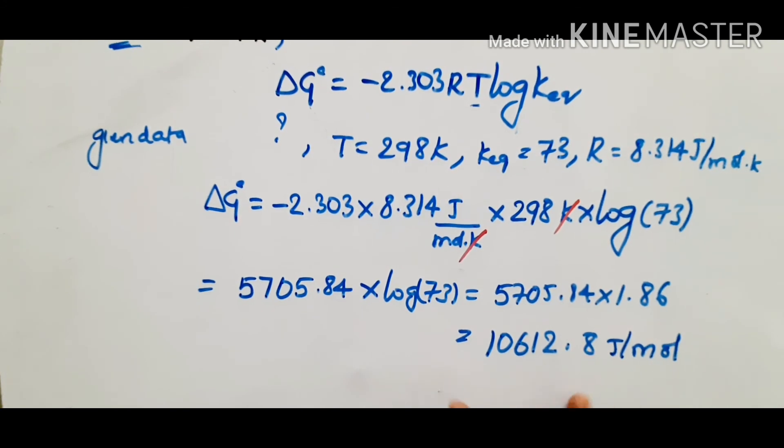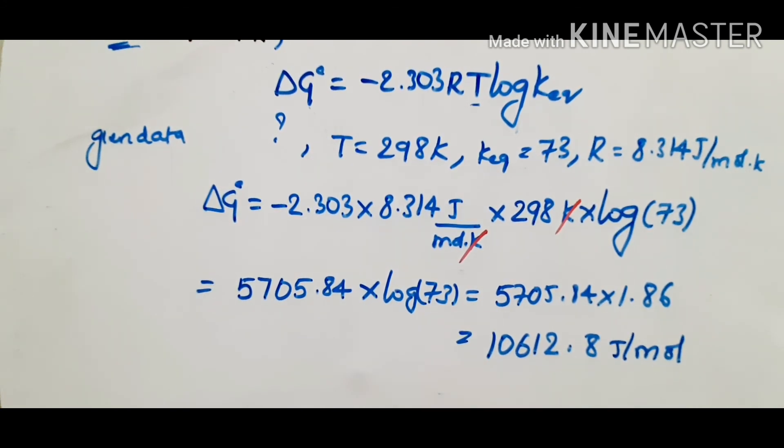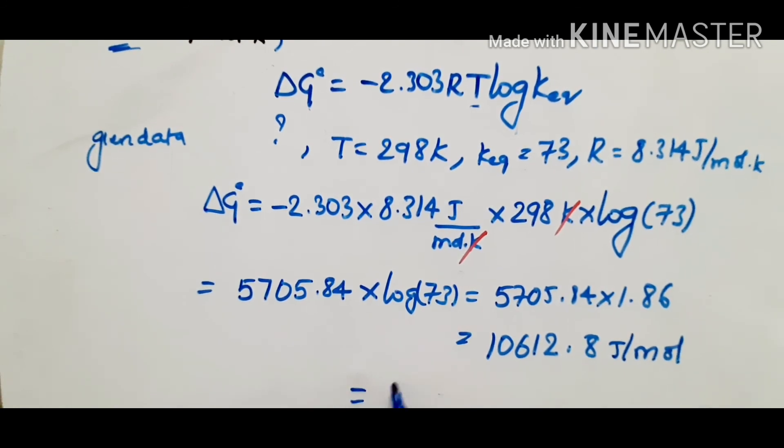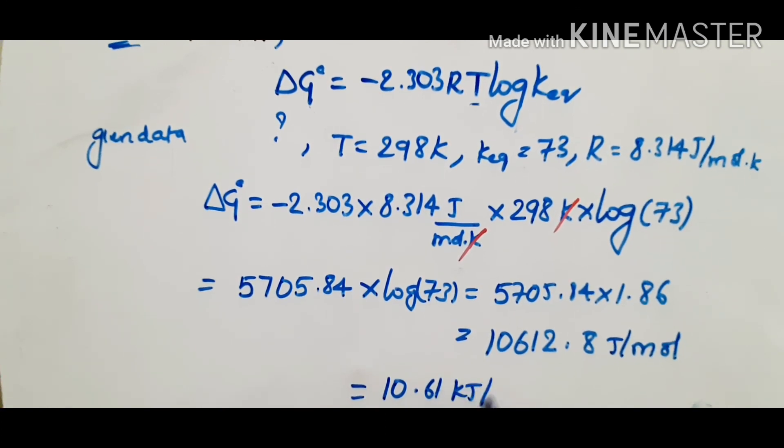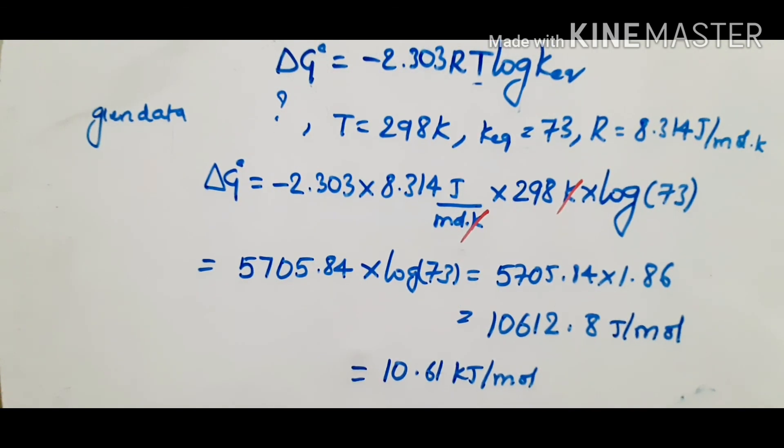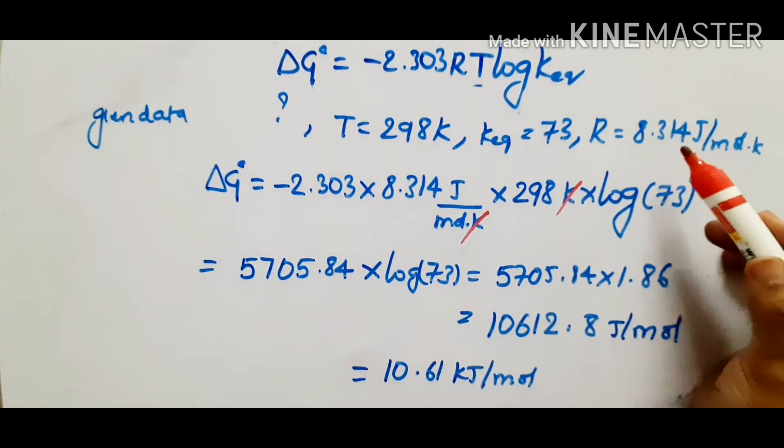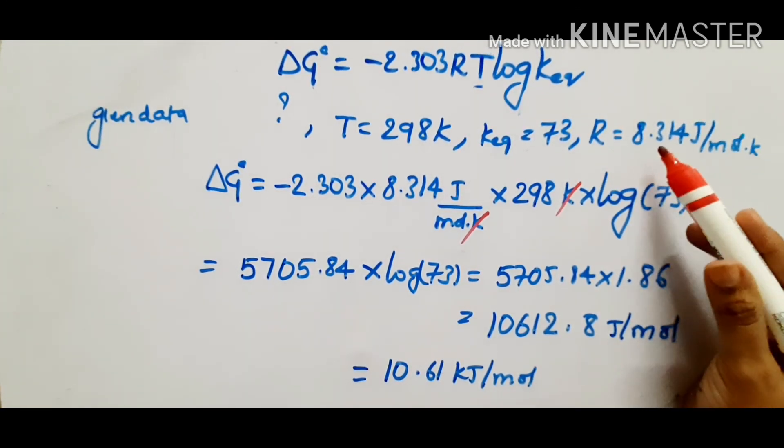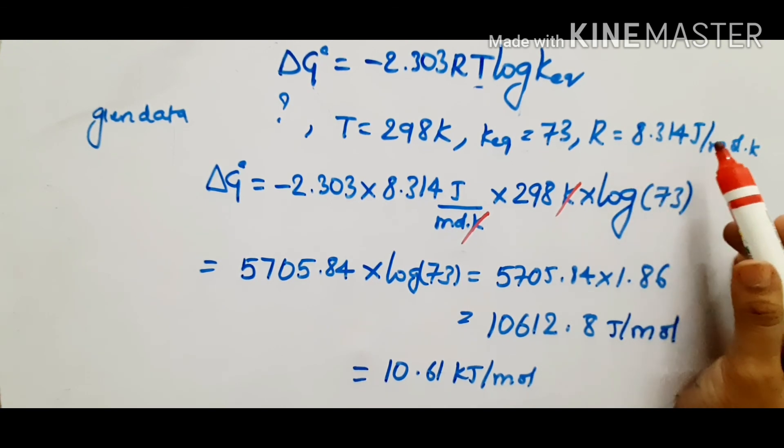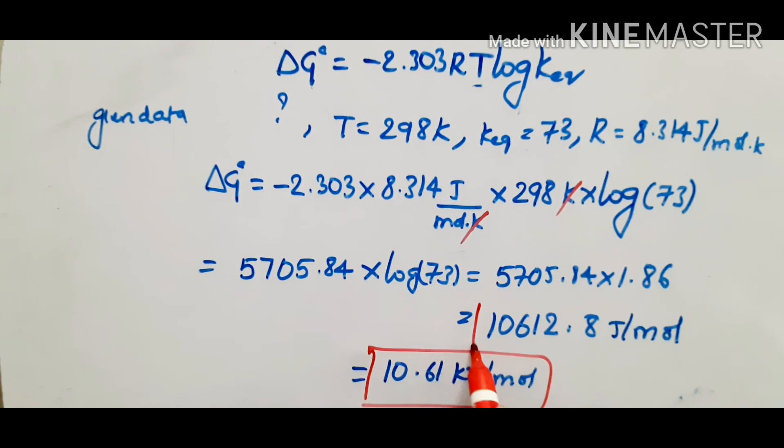Suppose in the question options the values are in kilojoules, then divide by 1000. So that answer will be 10.61 kilojoule per mole. Suppose if the options are directly in kilojoules, you have to take this R value in kilojoules, which is 0.00831 for kilojoules. Then you can directly get the value. This is how you can calculate the delta G naught of reaction. Hope you guys understand this concept. Practice more. Thanks for watching.